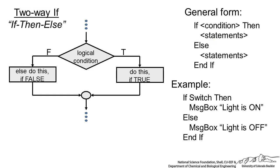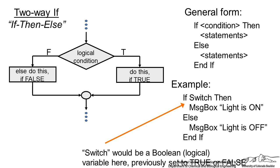So if switch, if that is true, then message box light is on. Otherwise, we want a message box that says light is off. This is the most common if-structure that is used.